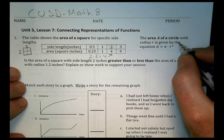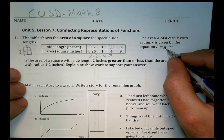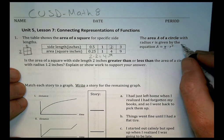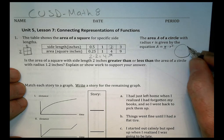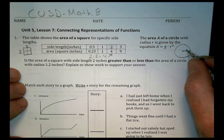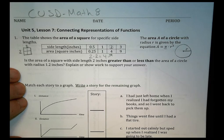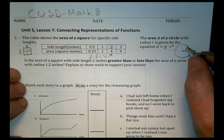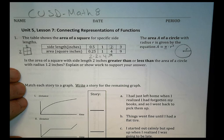The area of a circle with radius r is given by the equation area equals pi times r squared. So we would take the radius of a circle, square that value, and then multiply it by 3.14. So it's radius squared and then times 3.14.